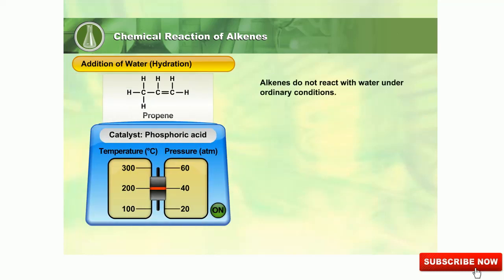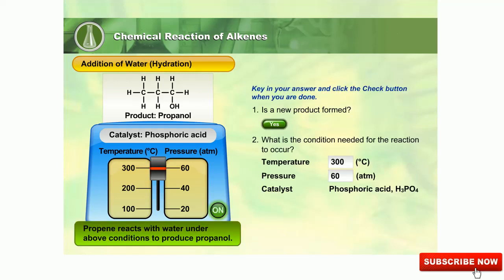Alkenes do not react with water under ordinary conditions. However, it can happen when alkene reacts with steam under specific conditions. Alkene reacts with steam in the presence of phosphoric acid as a catalyst at 300 degrees Celsius and 60 atmospheres to produce an alcohol.